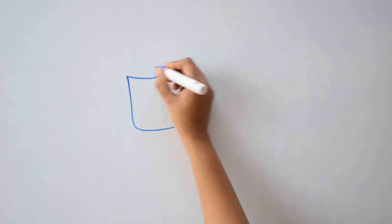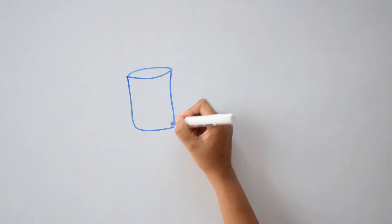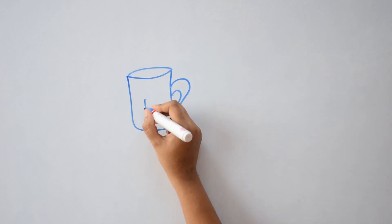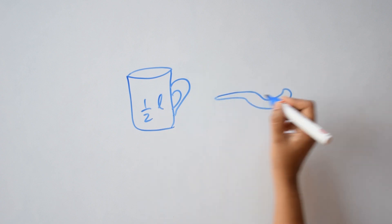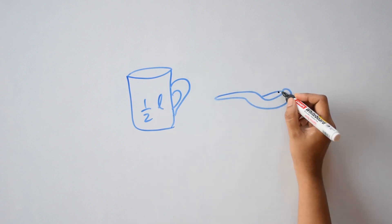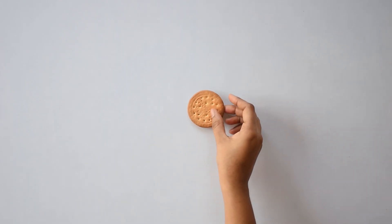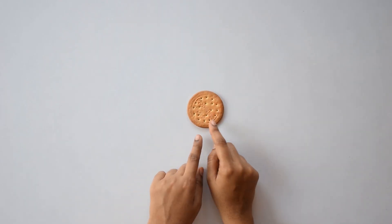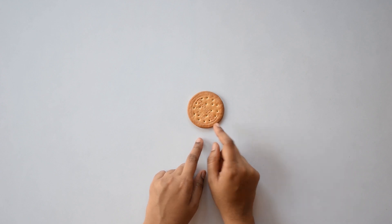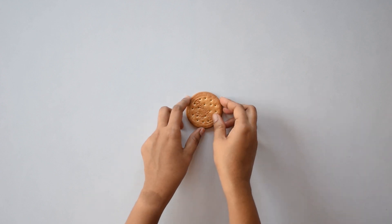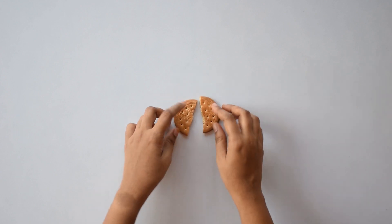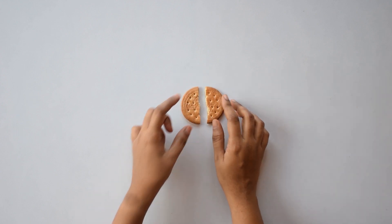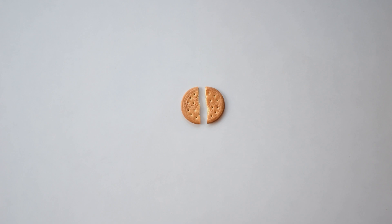We have all heard about half litre milk and quarter teaspoon salt. The half and quarter here are nothing but fractions. Let's take a biscuit. This is one whole of a biscuit. Suppose I break it into two parts. Here I have two equal parts of the same biscuit.